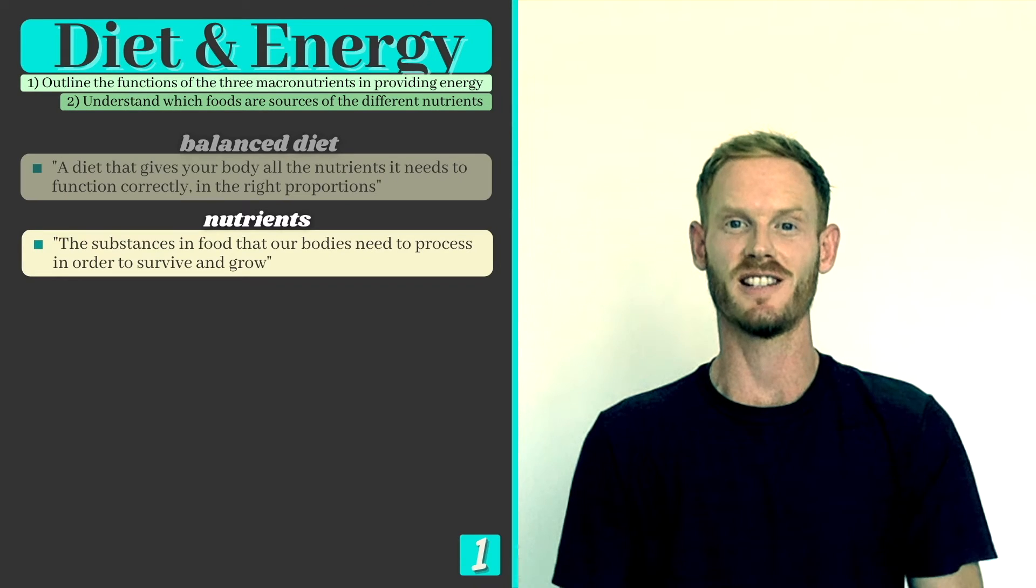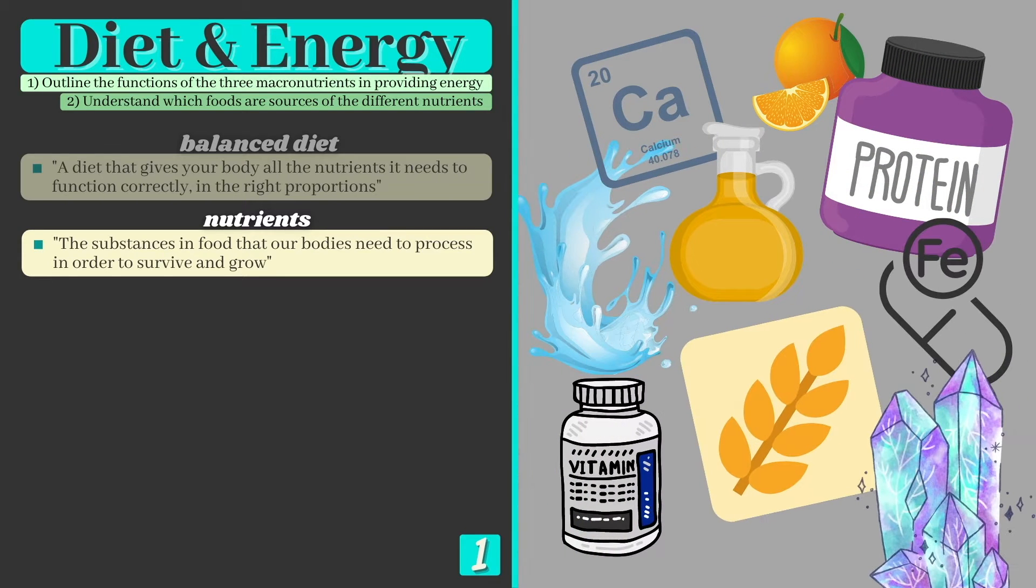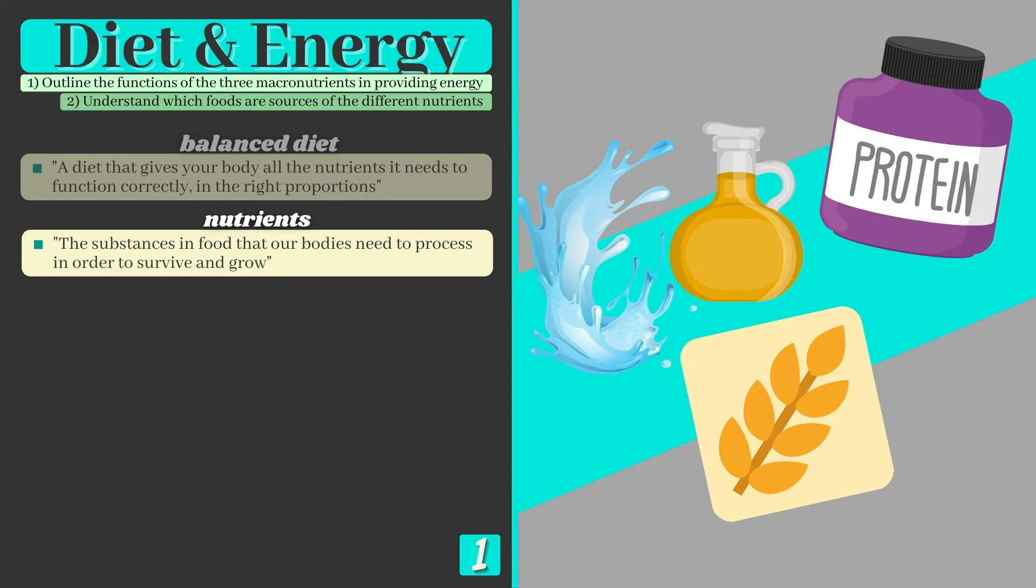Nutrients are substances in food that our body needs to process in order to survive and grow. Although we need to consume several different nutrients to be healthy, the vast majority of our diet is made up of just four.